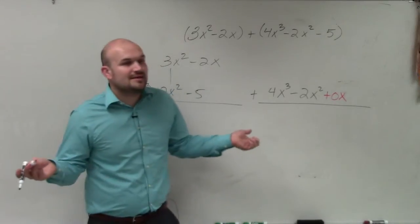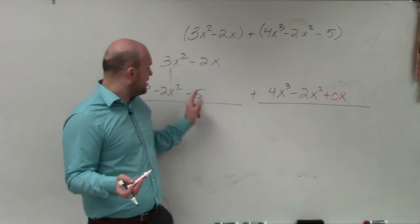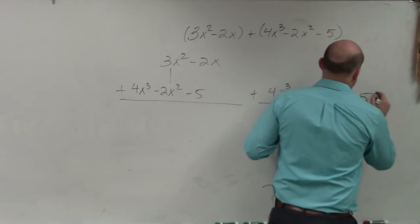So I can write plus 0x. Because what's 0 times x? Nothing. 0, right? But what happens with 5? And then, hold on, 5's still there. Minus 5.